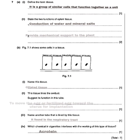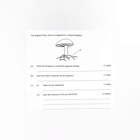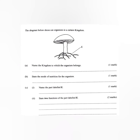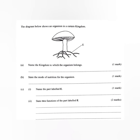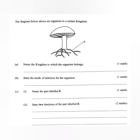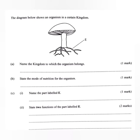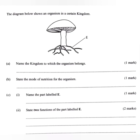The next question comes from nutrition. It says the diagram below shows an organism in a certain kingdom. This organism is called the mushroom. Question A says: name the kingdom to which the organism belongs. This organism belongs to kingdom Fungi. As for B, state the mode of nutrition for the organism. The mode of nutrition is saprophytic nutrition.